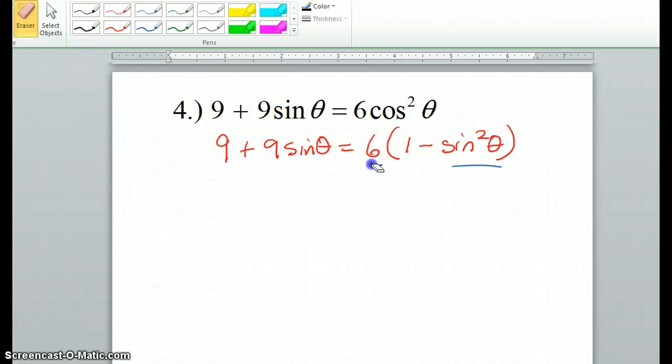Another thing is, since you have a sine squared theta and a sine, when you use u substitution, you're going to end up with a quadratic. So let me just start going through this so that you can see what I'm talking about.